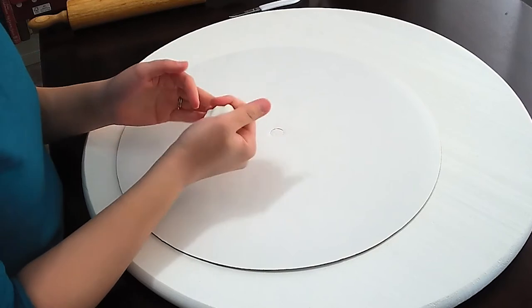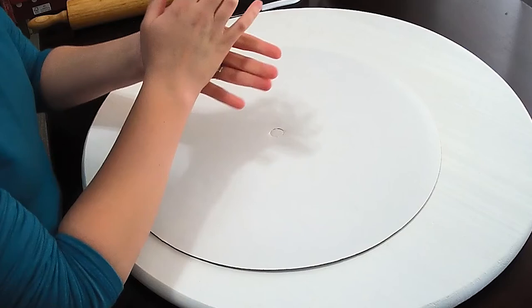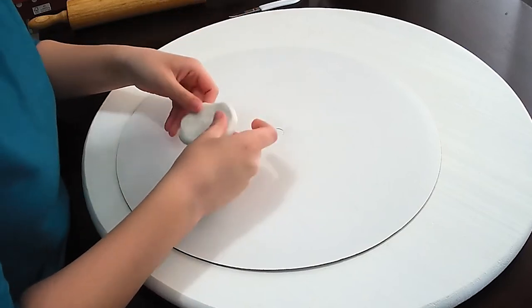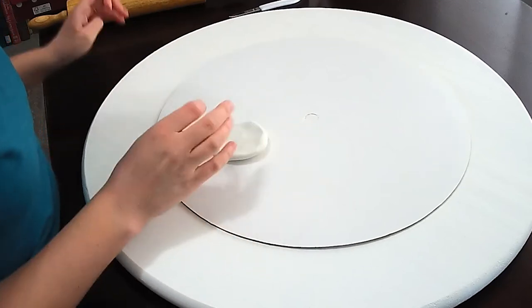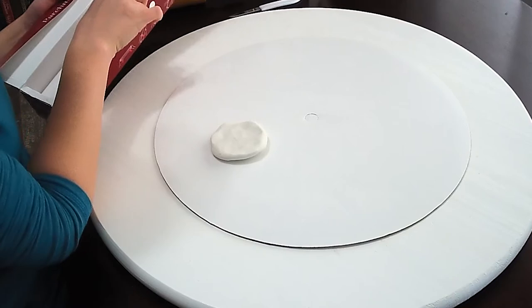Once you've worked your clay into a nice soft ball of clay, you want to squish it down a little bit, and I do recommend using a rolling pin because we're going to be making some circles to stack for this, and it's going to be a lot easier to work with a nice flat amount of clay.